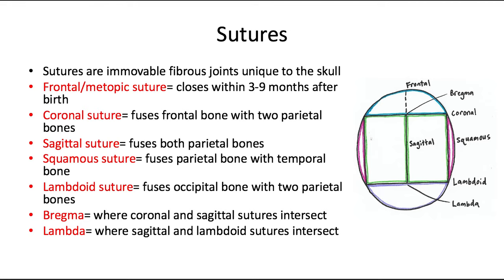As the skull matures, the fontanelles disappear and we are left with sutures, which are immovable fibrous joints unique to the skull. These sutures close completely by around age 20. The one exception is the frontal or metopic suture, located at the midline of the frontal bone, which closes much earlier — within three to nine months after birth.